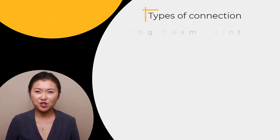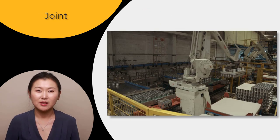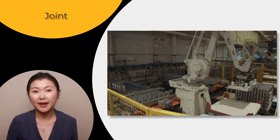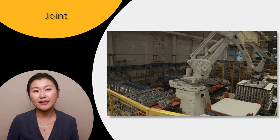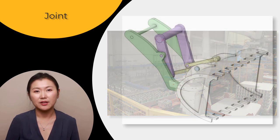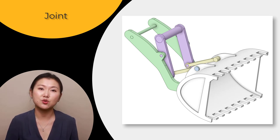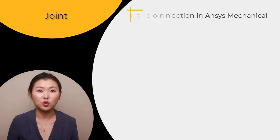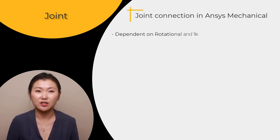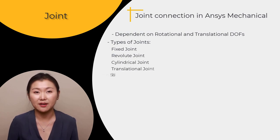The last type of connection we want to discuss is joints. Looking at a robotic arm, the connections between the different parts are designed to behave in desired ways — that is, movement between the parts is only allowed in certain directions. In certain simulations, engineers may not care about the distortion or stress around these joints, but may be concerned with capturing the desired kinematic movement. Depending on the nature of the rotational and translational degrees of freedom, ANSYS Mechanical provides different joint types to represent various kinematic behaviors.